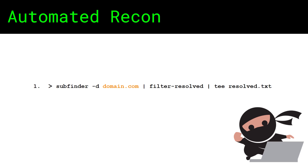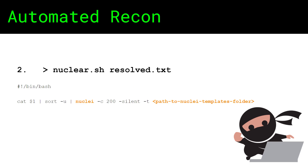Now a little bit more in depth. Step 1: run Subfinder on your chosen domain, pipe that to Filter Resolve, and have your results displayed in the output and also saved to a text file. Step 2: run a simple bash script on the resolved ones. The bash script reads the file from input — in this case argument 1 in the terminal — and sorts for unique results.